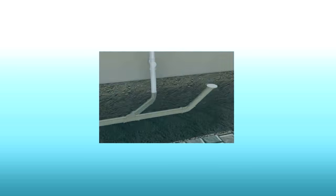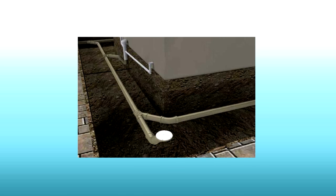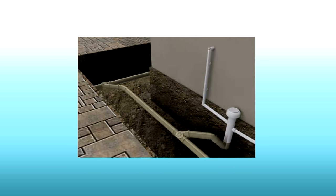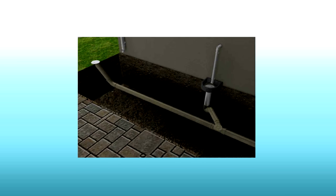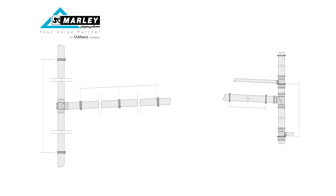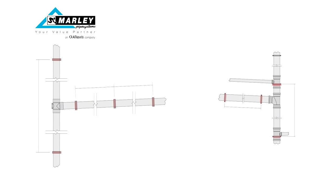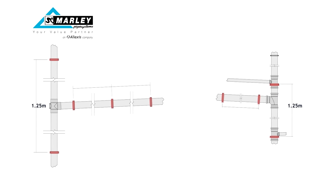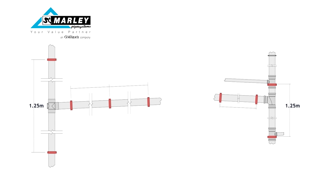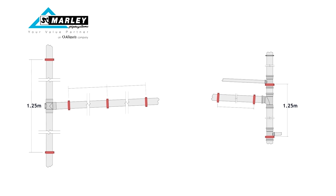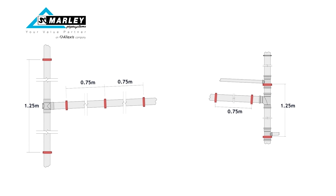Fit the pipe clips at a maximum of 2 meters apart on vertical pipe and a maximum of 1 meter on horizontal pipe. For waste systems joining into soil pipes, pipe clips should be fitted at a maximum of 1.25 meter spans on vertical pipes and a maximum of 0.75 meter spans on horizontal pipes.